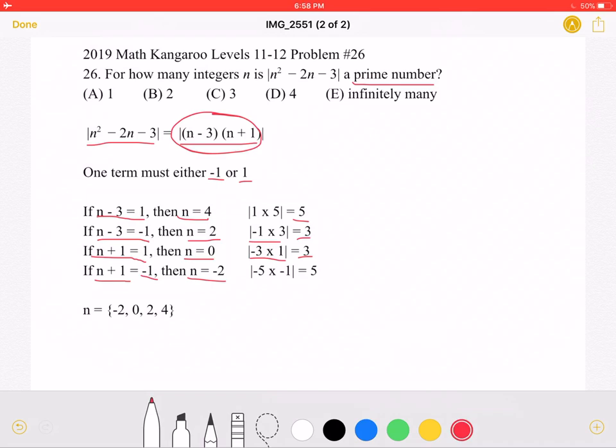(-5)(-1) would be equal to 5. So as we can see, for the integers 4, 2, 0, and -2, this is a prime number. Therefore, we have four integers which make the statement true.